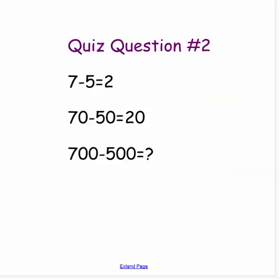Quiz question number 2. Again, get out your math notebook and copy these problems. You have 7 minus 5 equals 2. 70 minus 50 equals 20. 700 minus 500 equals... That one is your job to solve it. So think about going from ones to tens to hundreds as you solve these problems.